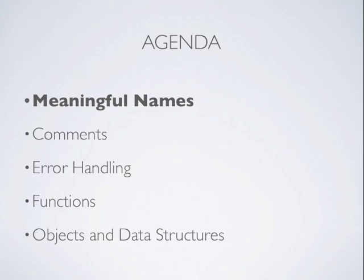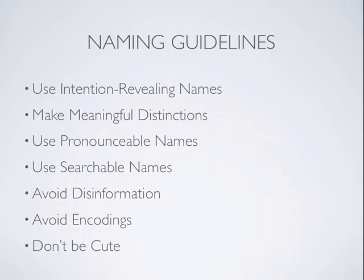So let's take a look at meaningful names. What makes for a good name? What makes for a bad name? Whether we're talking about a class, a function, a variable, an assembly, or a project, or an application itself — anything. We want our names to reveal their intent and to make meaningful distinctions from one another. But more than that, we want our names to be pronounceable and searchable. For bad names, we don't want disinformation, we don't want encodings that aren't necessary, and we don't want to be cute with our names or have inside jokes.